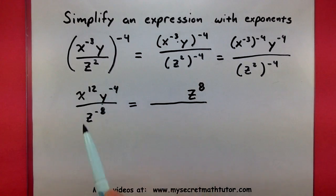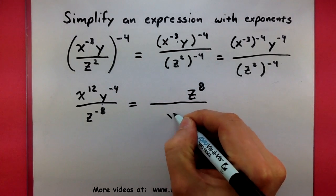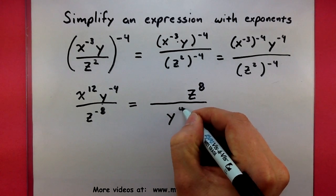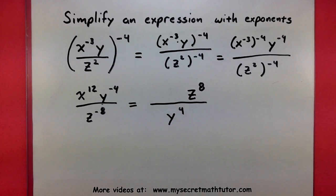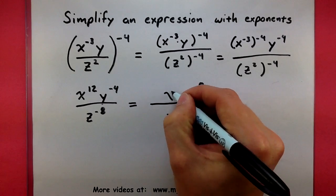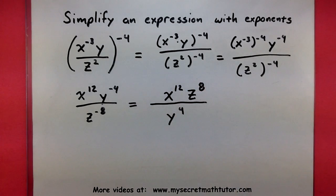Notice how the y has a negative exponent. So I'm going to move that one to the bottom and make its exponent positive. Now that x to the 12th, it doesn't have a negative exponent, so there's no need to change where it is. It's going to stay right where it is.